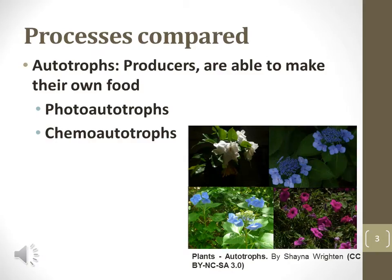Autotrophs are producers because they are capable of creating their own food, which means they can store light or chemical energy through photosynthesis or chemosynthesis, respectively. Autotrophs do not need to consume anything but water and carbon dioxide to produce energy. Photoautotrophs use sunlight to store energy in organic molecules, while chemotrophs use chemicals from the environment to store energy in organic molecules.